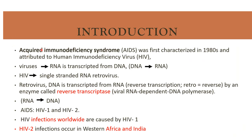Acquired immunodeficiency syndrome was first characterized in the 1980s and attributed to human immunodeficiency virus. Usually viruses are RNA transcribed from DNA, but HIV is a single-stranded RNA retrovirus. They are called retro because DNA is transcribed from RNA — reverse transcription occurs, and the enzyme used is reverse transcriptase enzyme, also called viral RNA-dependent DNA polymerase. So DNA is formed from RNA in HIV.